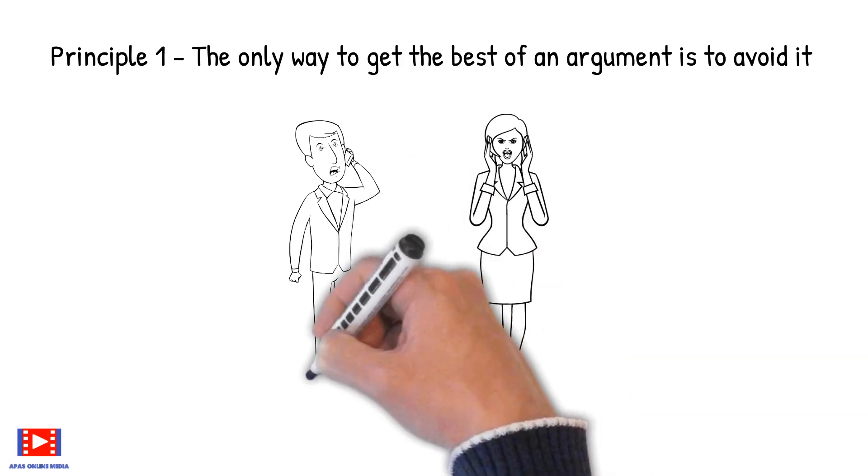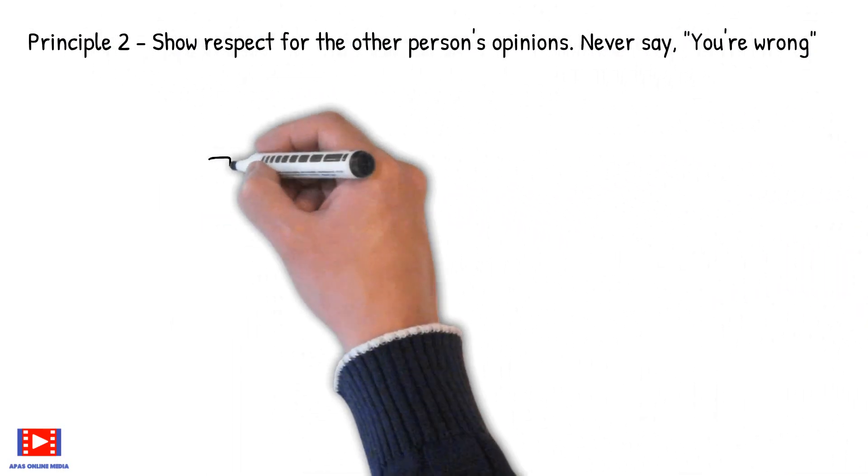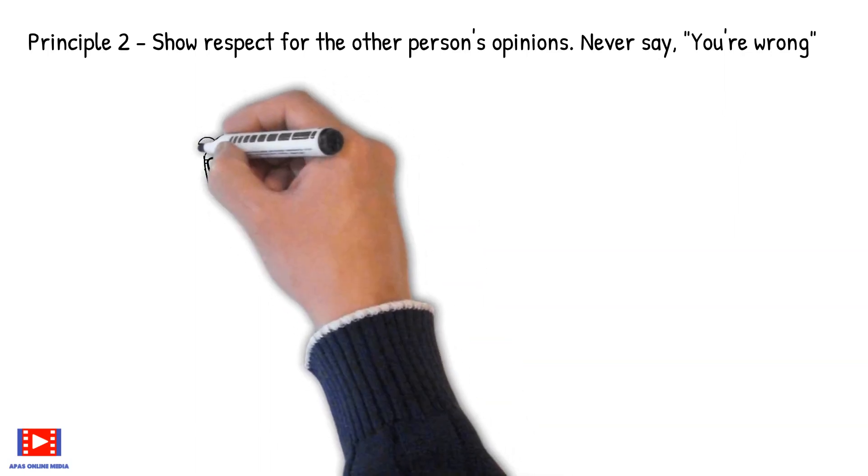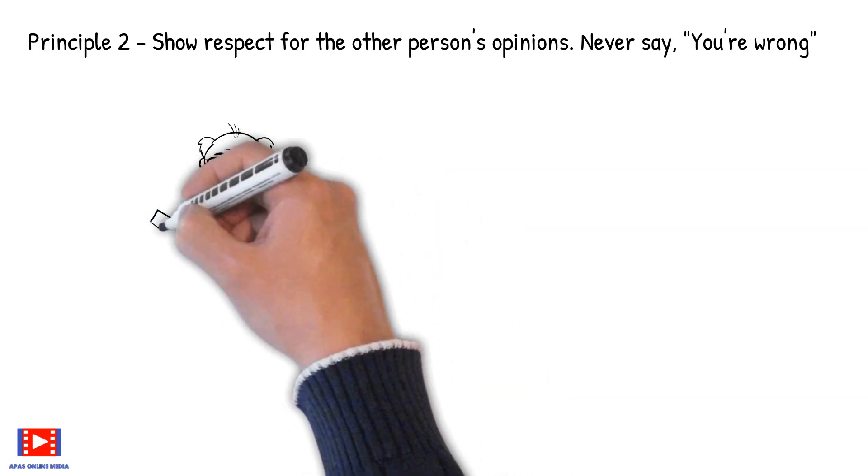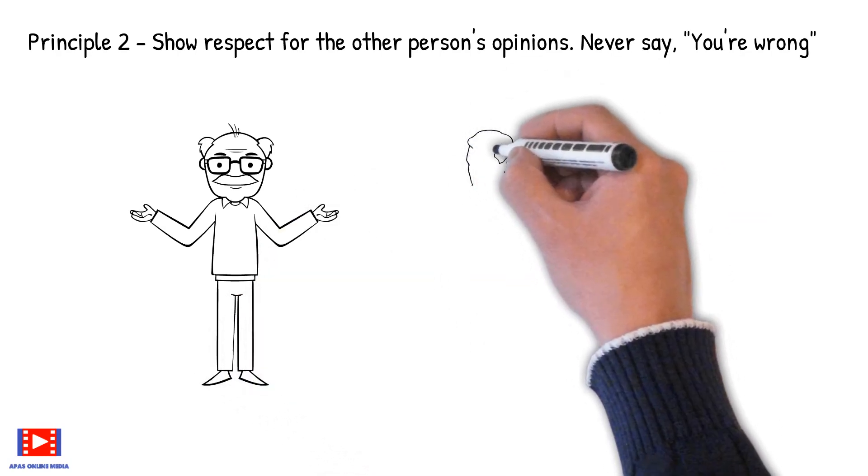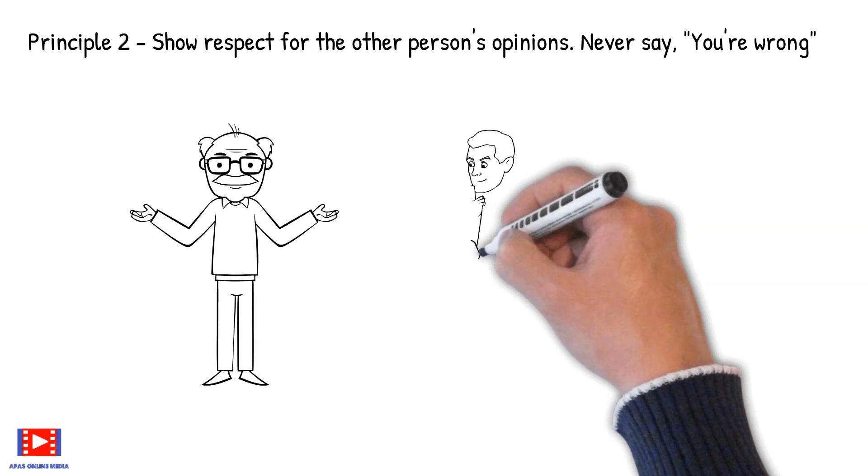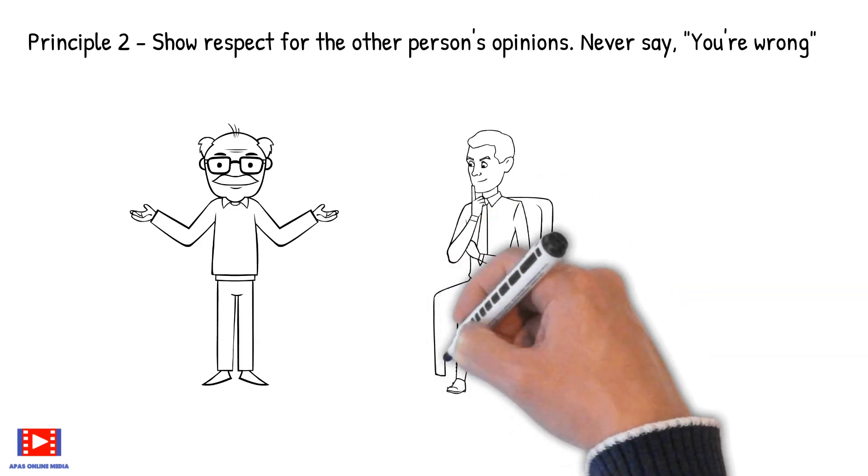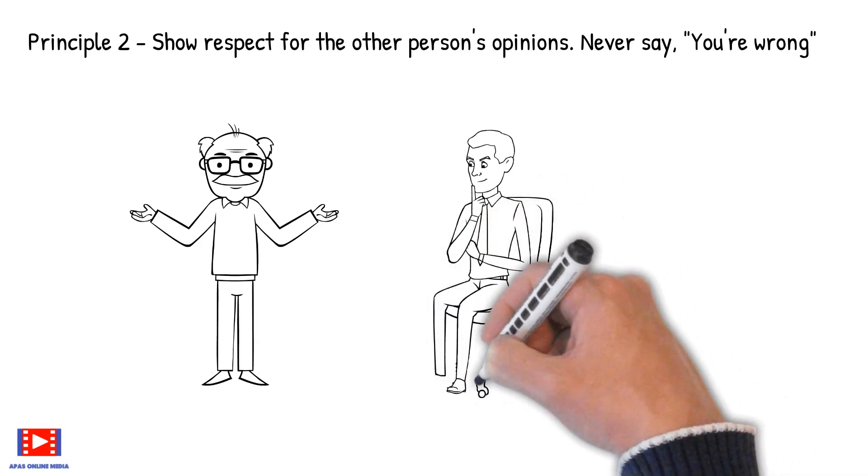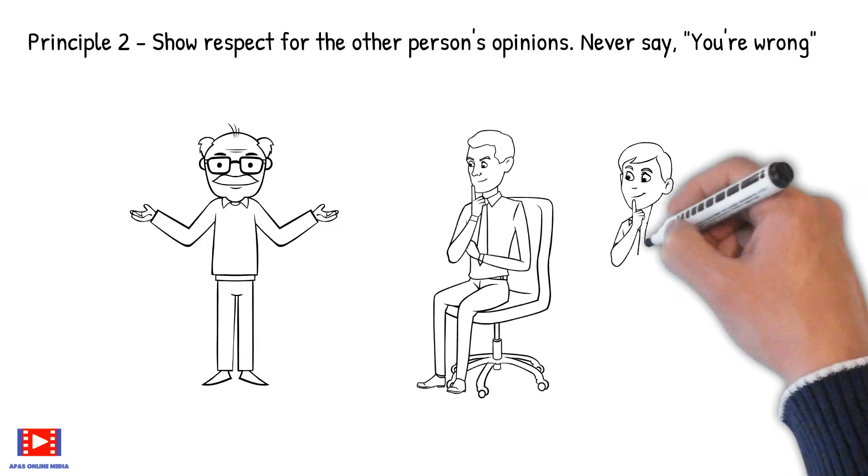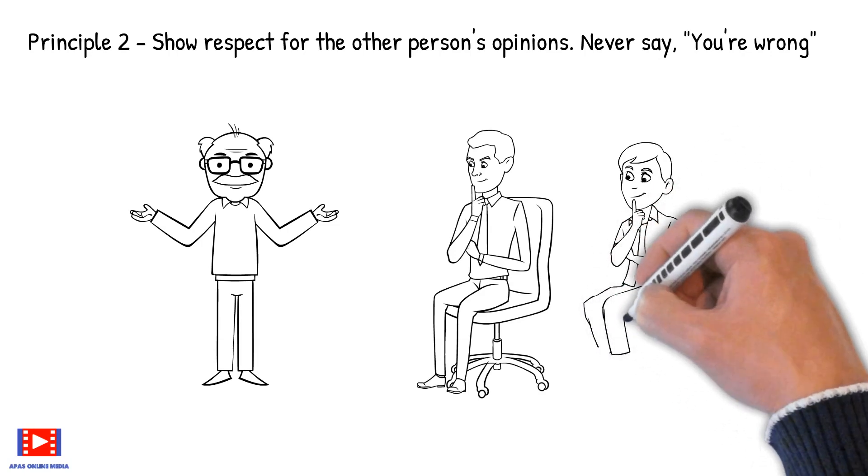Principle 2: Show respect for the other person's opinions. Never say you're wrong. Even though if we know the other person is wrong, we should never say that upfront. We should always give the other person to explain his or her thought process and understand why one person is saying something, what he means out of that, and only after understanding the entire context we should then give our opinion. We should always show respect to other person's opinion and let other person describe what they want to.